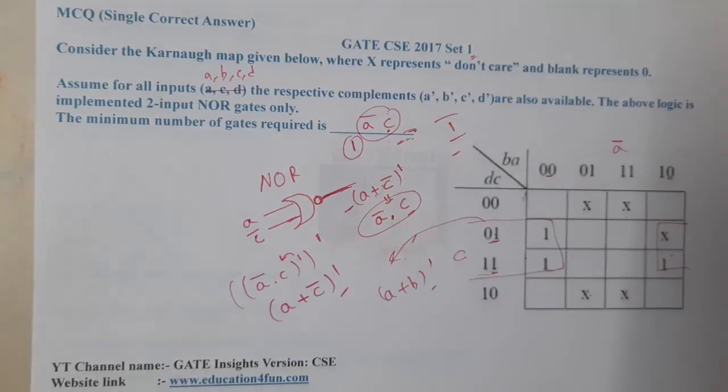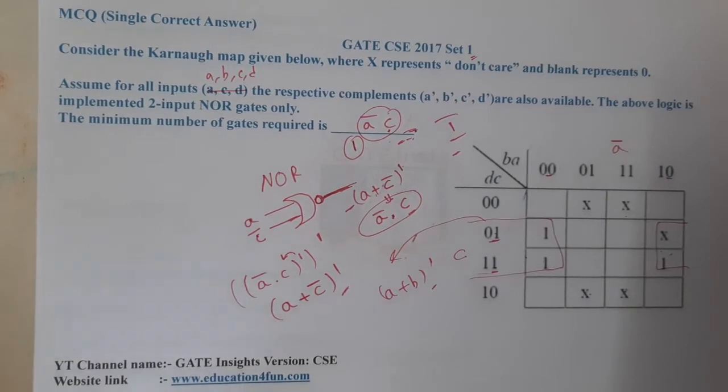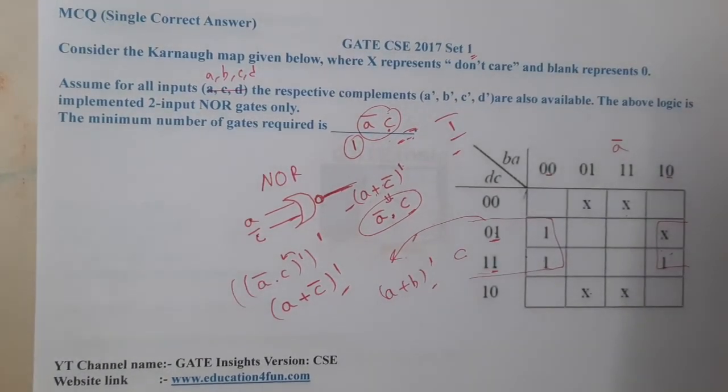a'c. It is matching. So, one—only with one single gate we are able to design our required equation. I hope everyone got a clear idea with respect to this question.